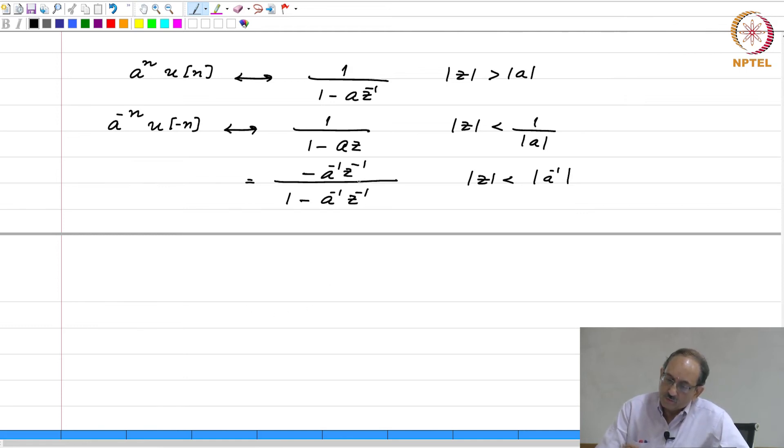Now, I have a factor z inverse in the transform, I want to get rid of that. To get rid of that, I need to multiply by z. If I multiply in the transform domain by z, I can get rid of this z inverse factor. But, if I multiply the transform domain by z in the time domain, I have to replace wherever n is there, I have to replace n by n plus 1, ok.